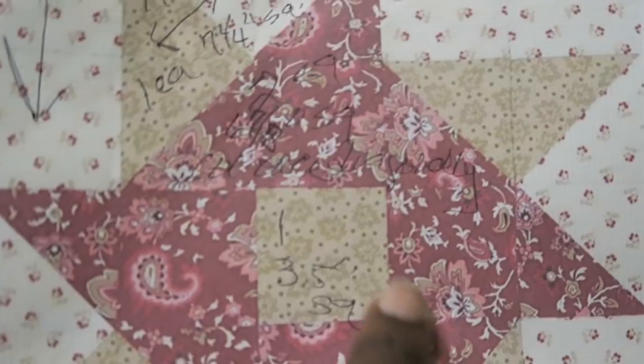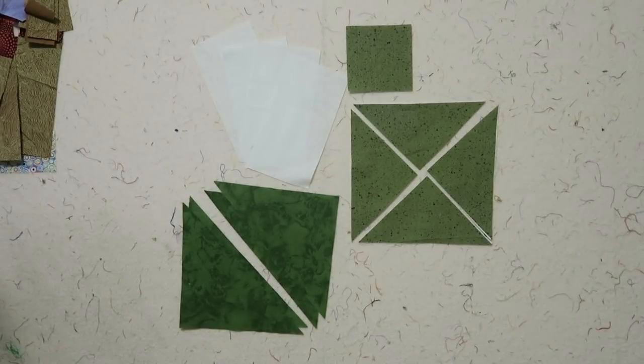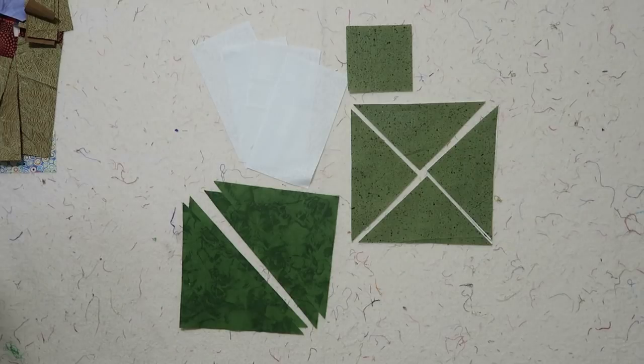And I'm going to cut them twice diagonally and then the last thing you'll need is your center square. So I have on my wall here the fabrics that I have chosen. I will set up my quarter square triangle and show you how that's made.